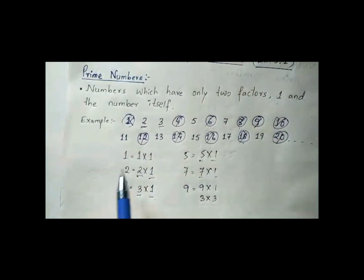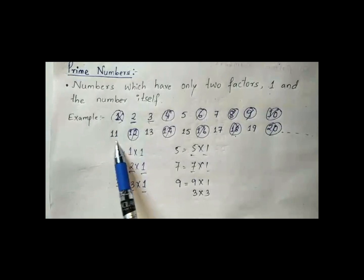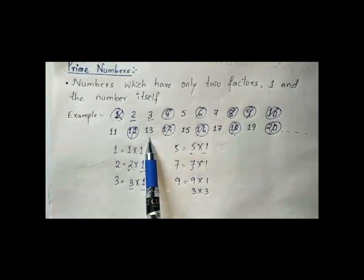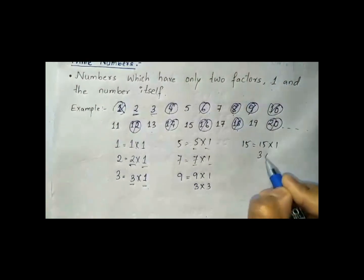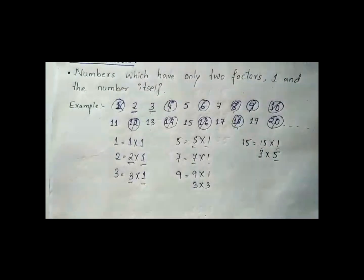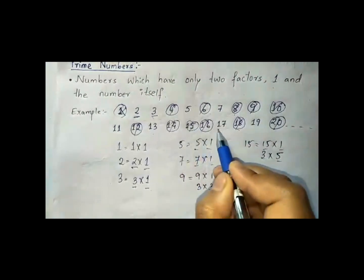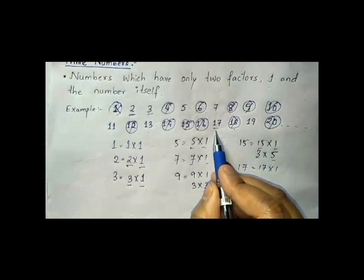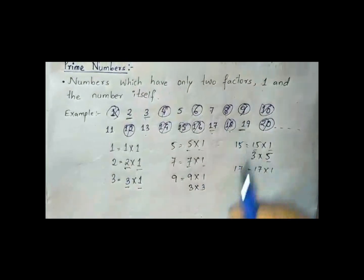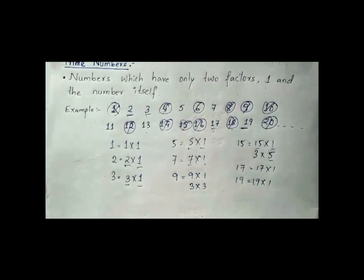Next, eleven — eleven also has only two factors, so it is a prime number. Now fifteen — fifteen has four factors, so 15 is not a prime number. 17 also has only two factors, that is why 17 is a prime number. 19 also has only two factors, that is why 19 is also a prime number.